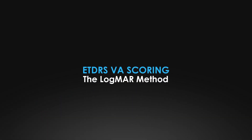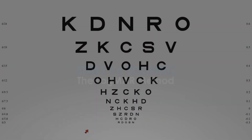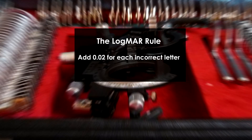Your patient would read down the charts until they start missing letters, as with any VA assessment. But now let's have a look at how we would do the scoring. 6/12 would be this line over here, and the patient would have got say two letters wrong. With LogMAR we're interested in the letters they get wrong, so the score for the 6/12 line would be 0.3 if they got all the letters right, but they got two wrong — so we simply add 0.02 for every letter they get wrong, giving you a final score of 0.34.